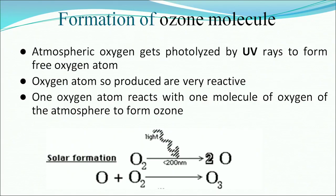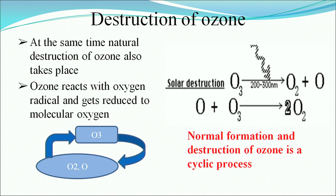Atmospheric oxygen gets photolyzed by UV rays to form free oxygen atoms. These reactive oxygen atoms then react with one molecule of atmospheric oxygen to form ozone (O3). At the same time, natural destruction of ozone also takes place — ozone reacts with oxygen radicals and gets reduced back to molecular oxygen. The O3 and O2 cycles are continuously taking place in our atmosphere.